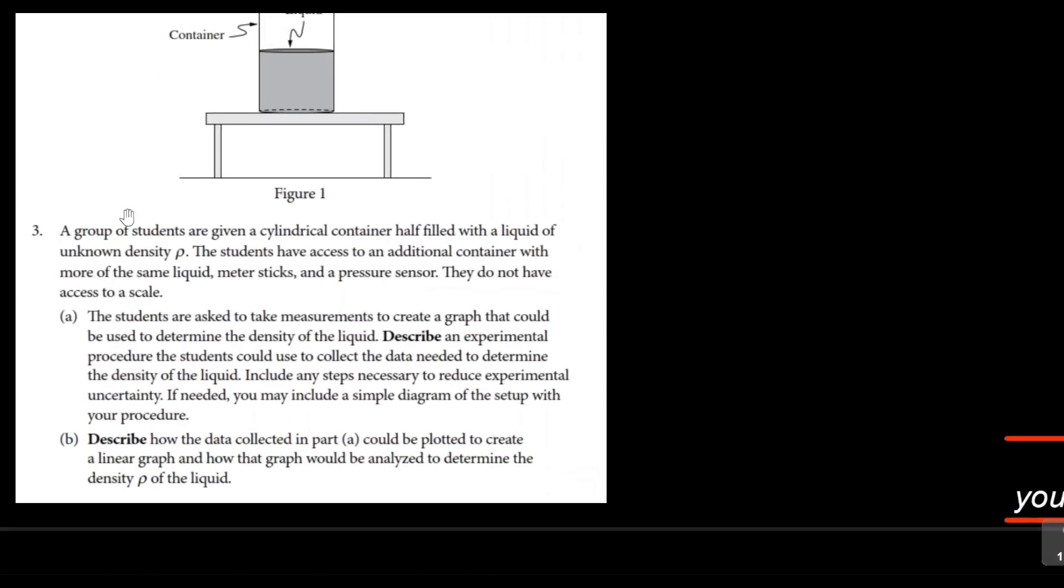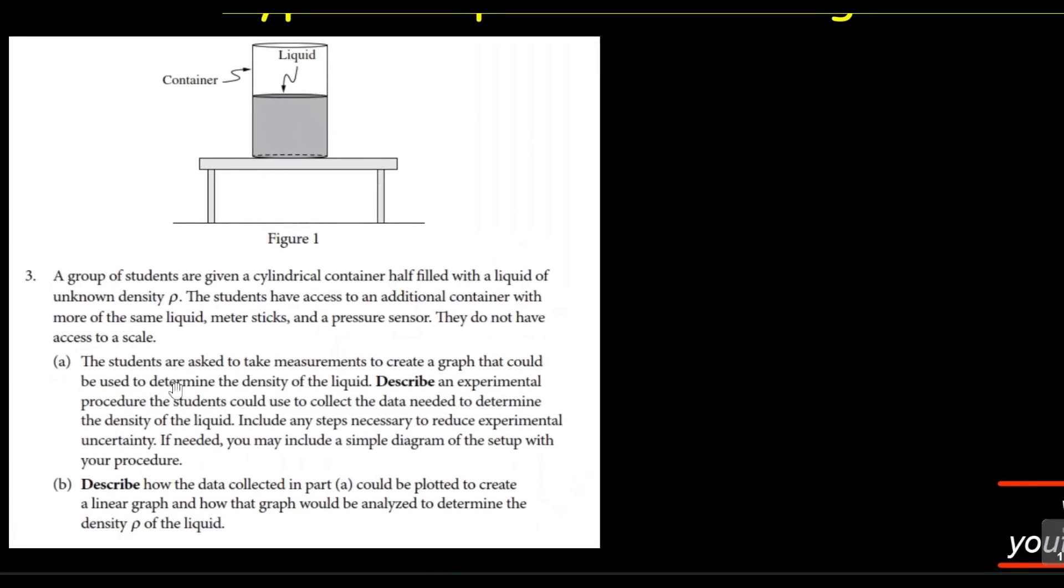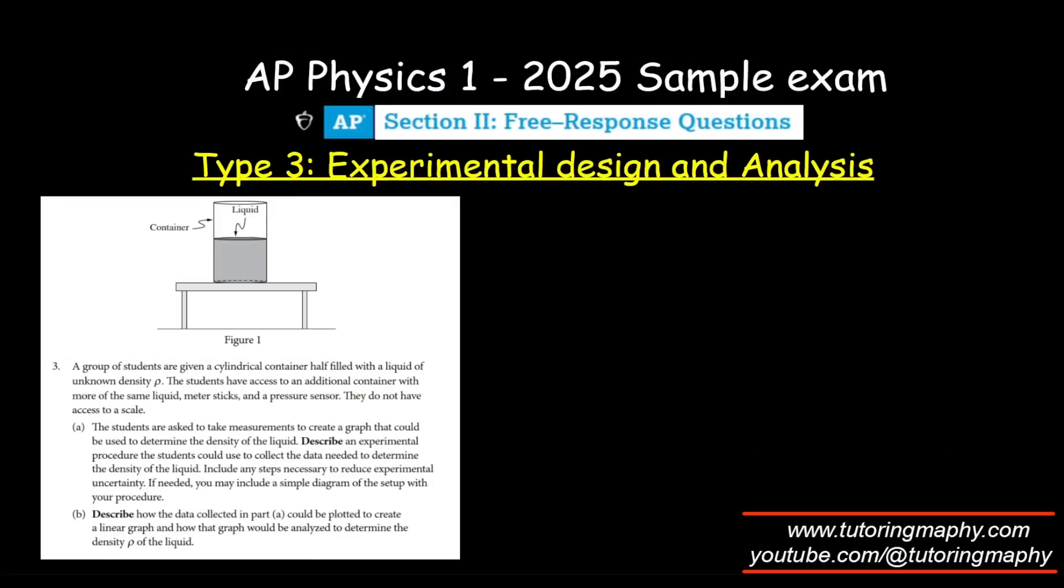Now, the students are asked to take measurements to create a graph that could be used to determine the density of the liquid. Describe an experimental procedure that the students could use to collect the data needed to determine the density of the liquid. Include any steps necessary to reduce experimental uncertainty.